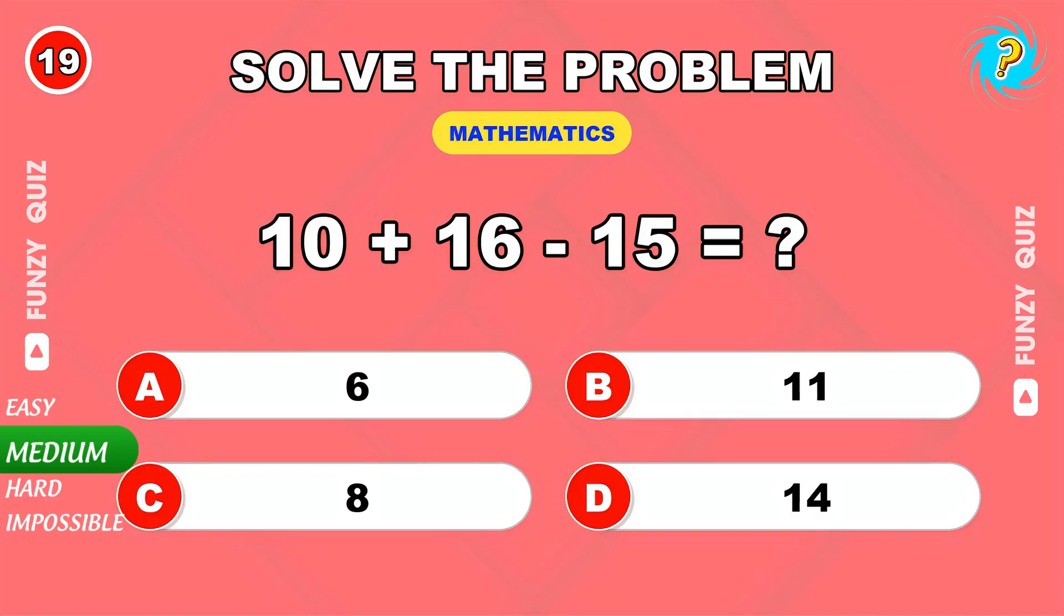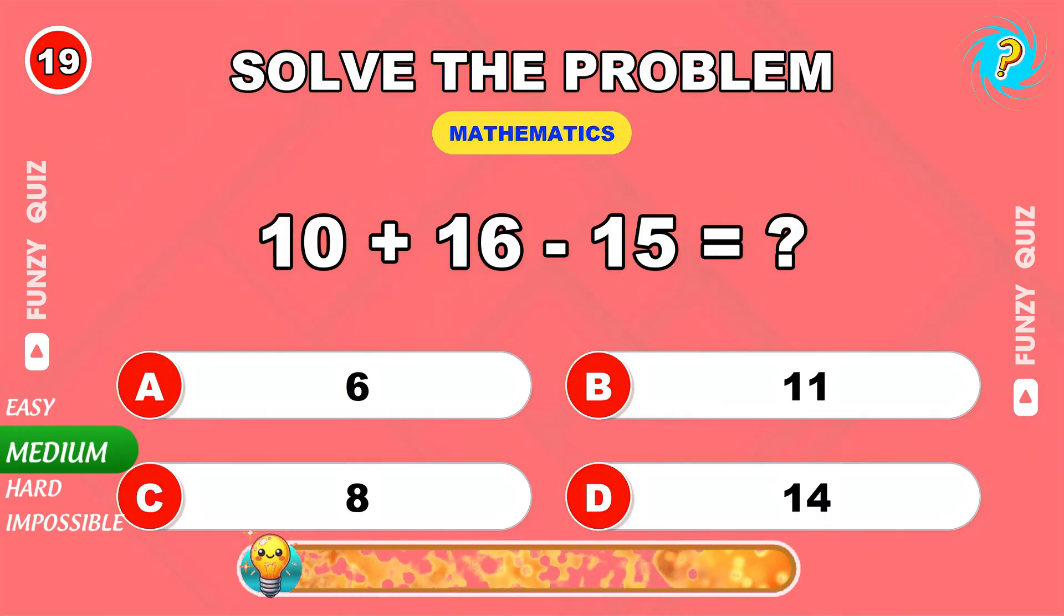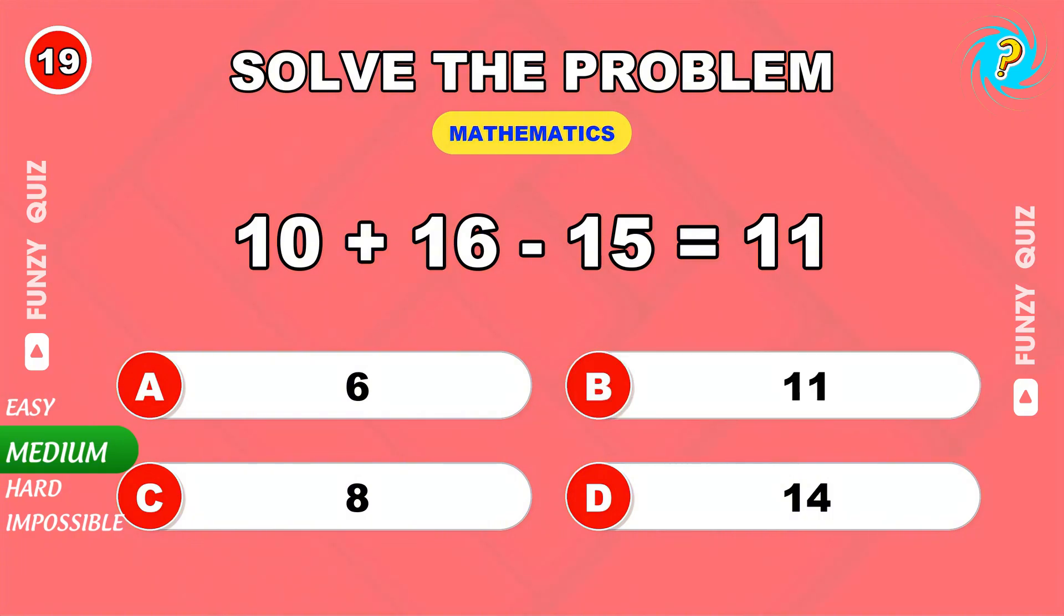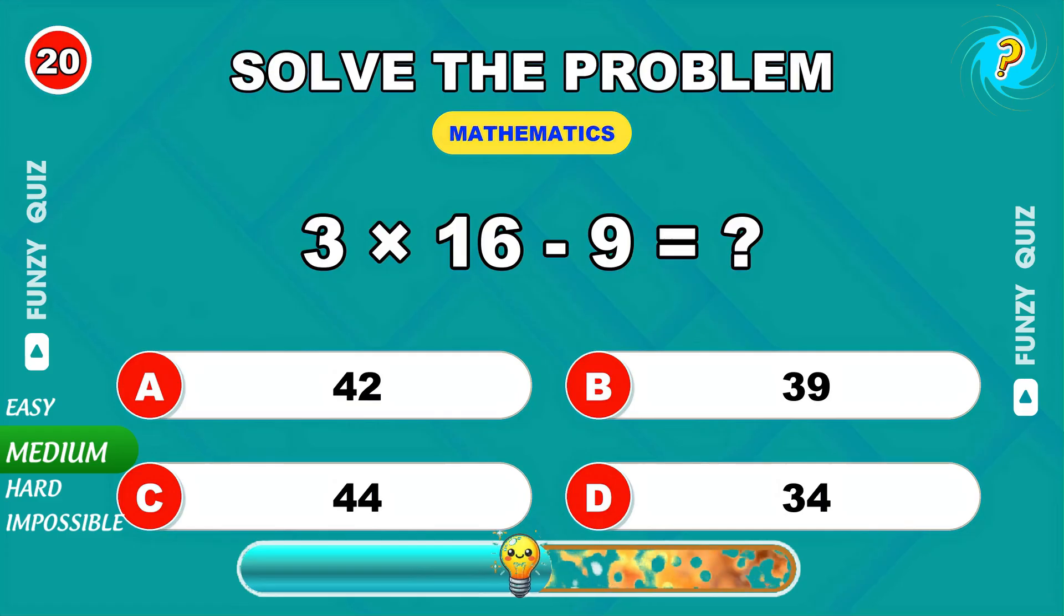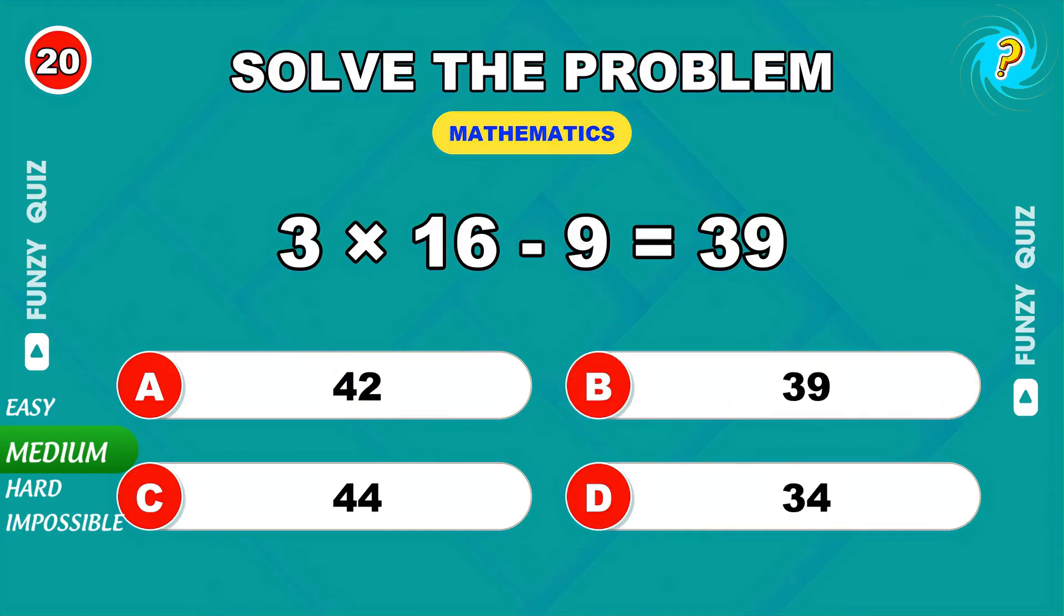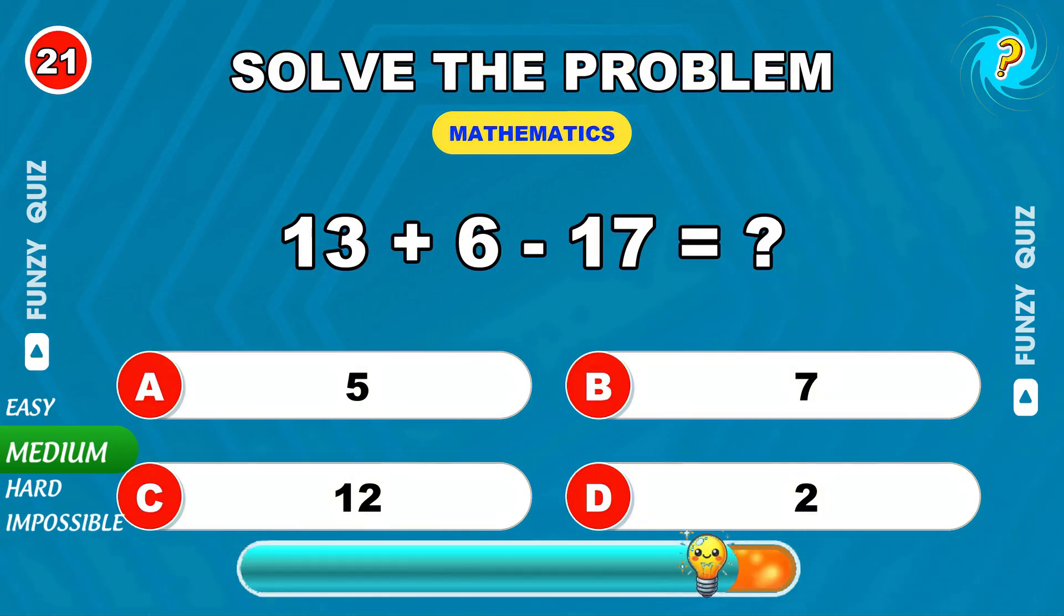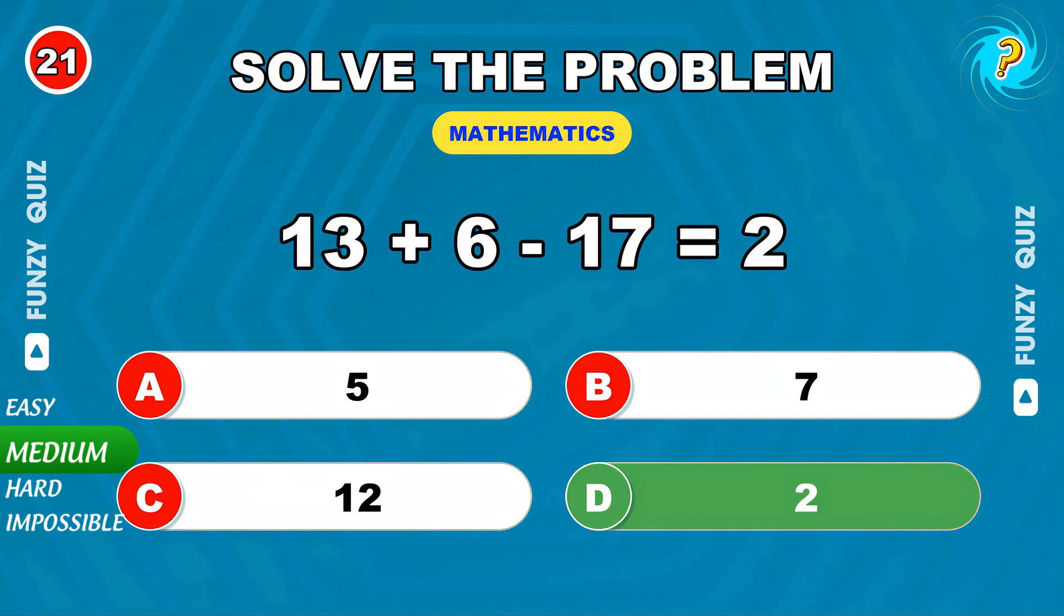10 plus 16 minus 15. 11, great work. 3 times 16 minus 9. 39, brilliant. 13 plus 6 minus 17. 2, well calculated.